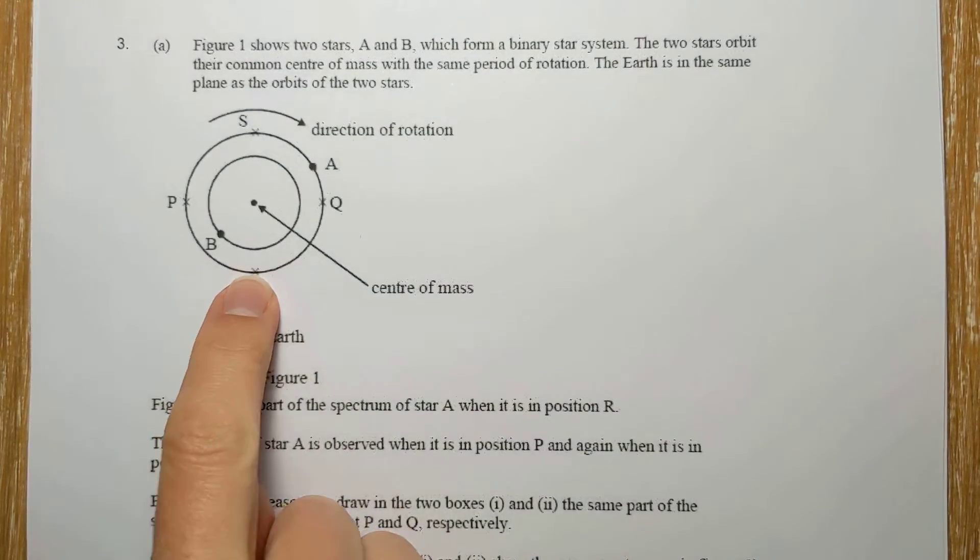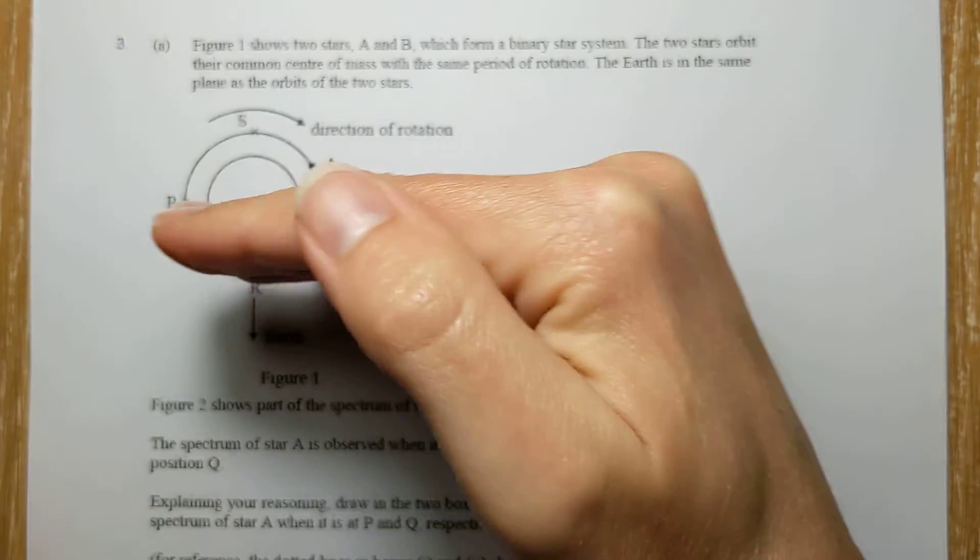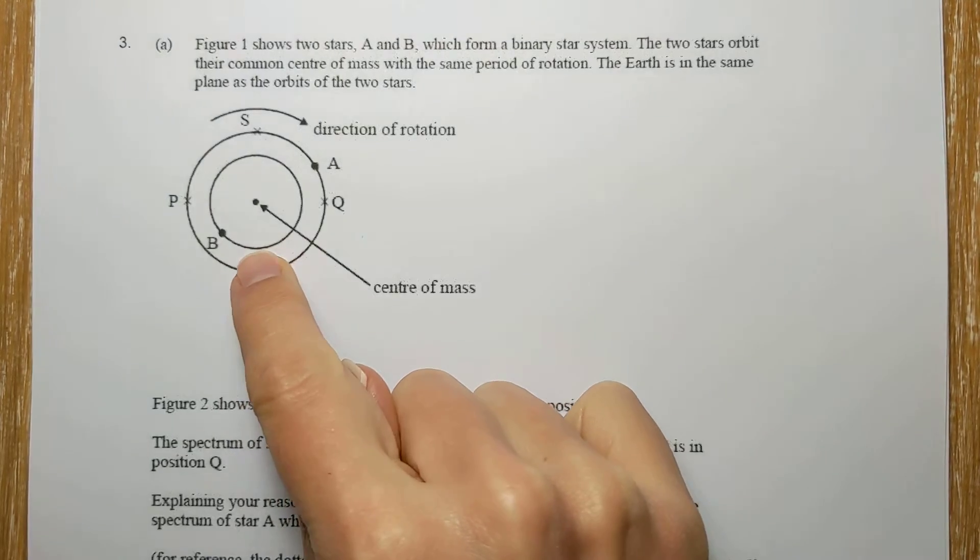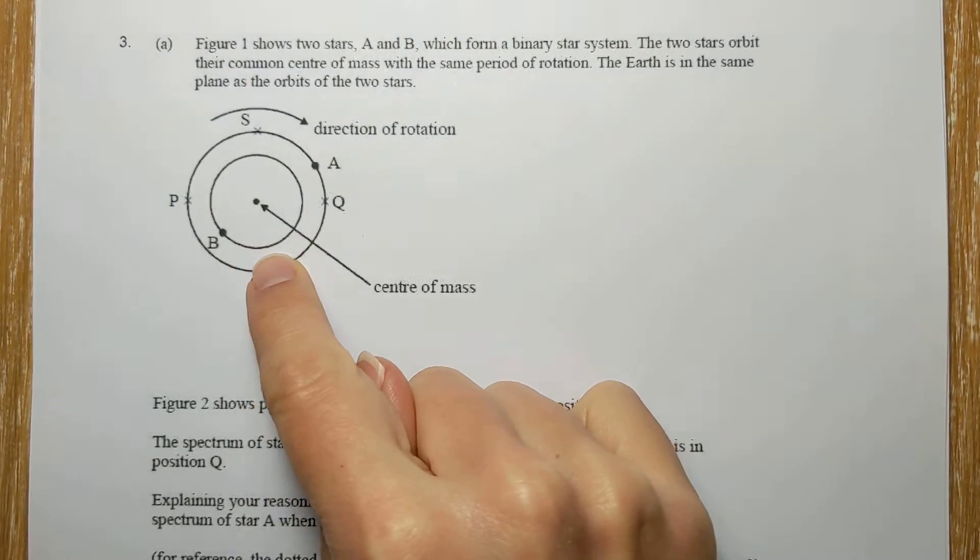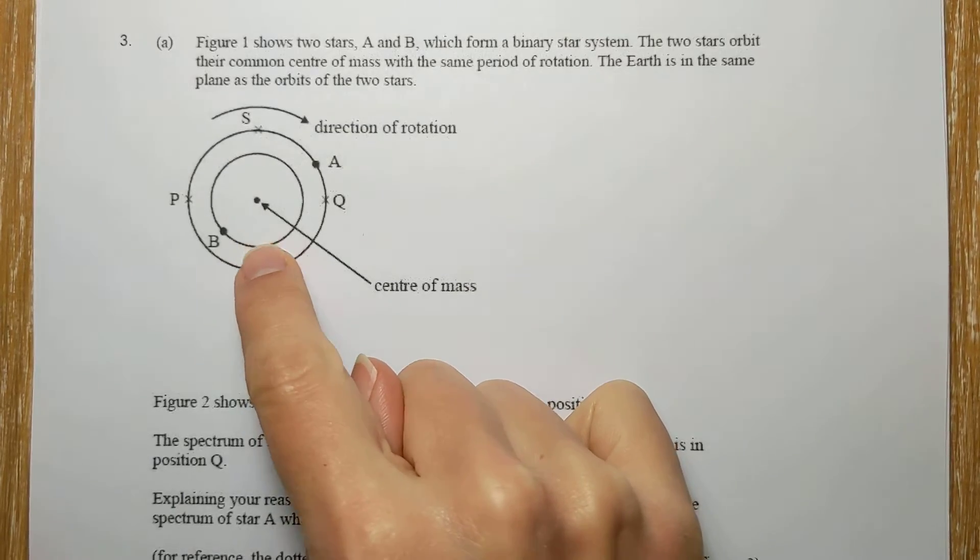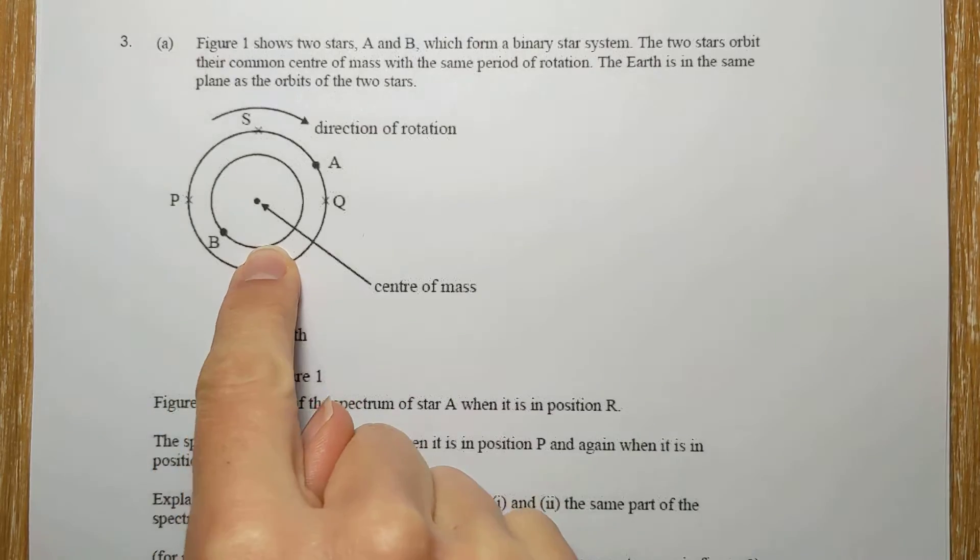And finally, sneakily, when the star is at R, at that instant it's moving perpendicular to us. So actually it's not getting further away or closer, so at that point there's no shift at all. The light there is exactly the same as it would be if the star was completely stationary.